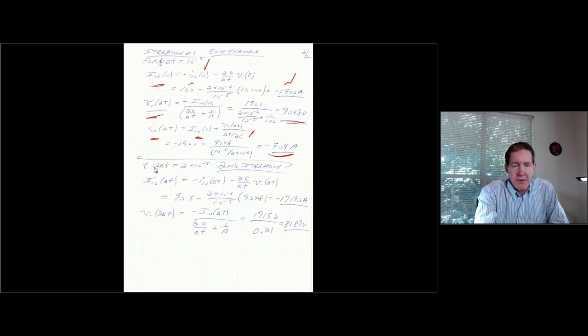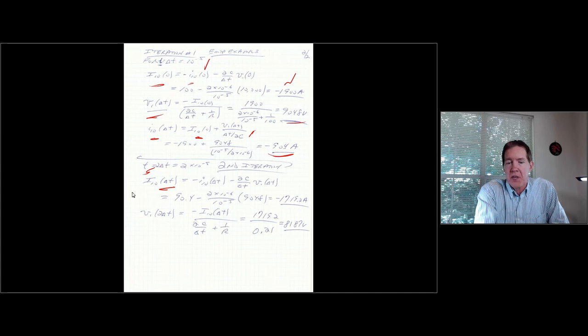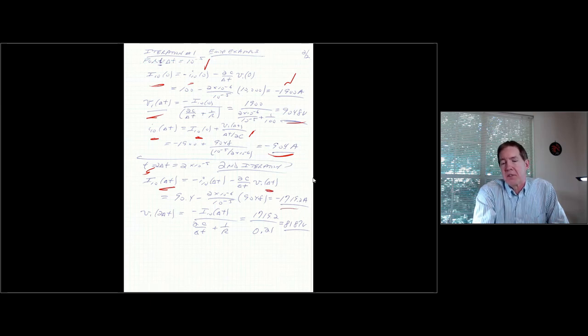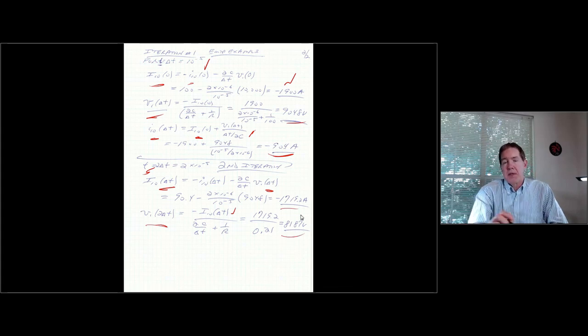For the next iteration at time T equal to 2 delta T, we just go through the same process again. So now what we want, we calculate the history. This time it's at time delta T. This is going to be minus I10 at delta T, which is the branch current, the minus value of the branch current at time delta T. Minus 2C over delta T times V1 at time delta T. This is going to give us minus 1,719.2 amps. And then I plug this back into the equation for voltage. And this is going to give us a voltage of 8,187 volts.